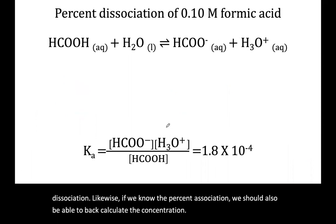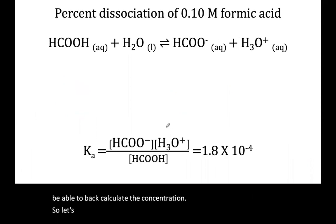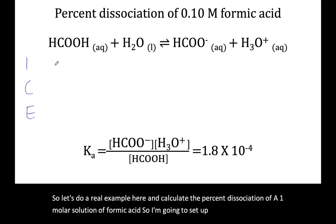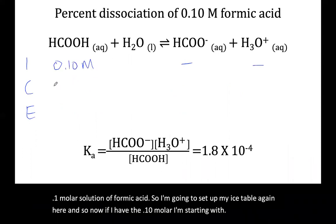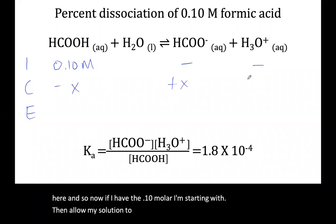So let's do a real example here and calculate the percent dissociation of a 0.10 M solution of formic acid. So I'm going to set up my ICE table again here. And so now if I have 0.10 molar I'm starting with, and then allow my solution to equilibrate.